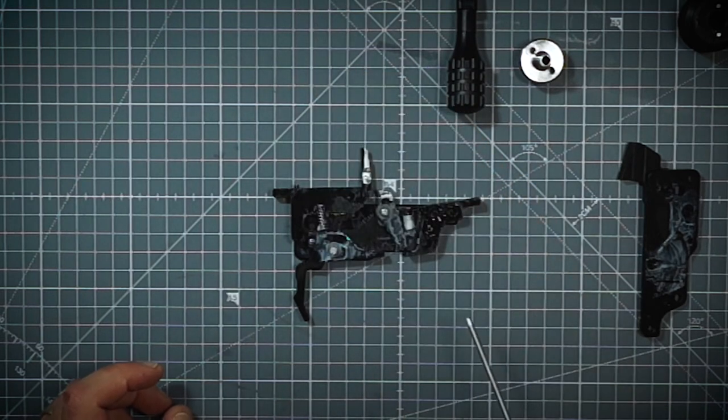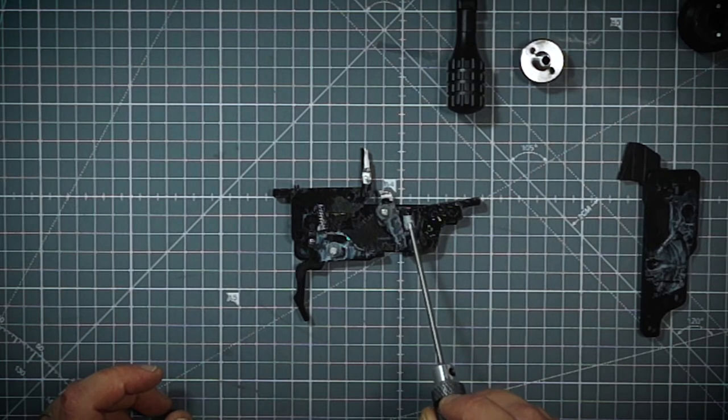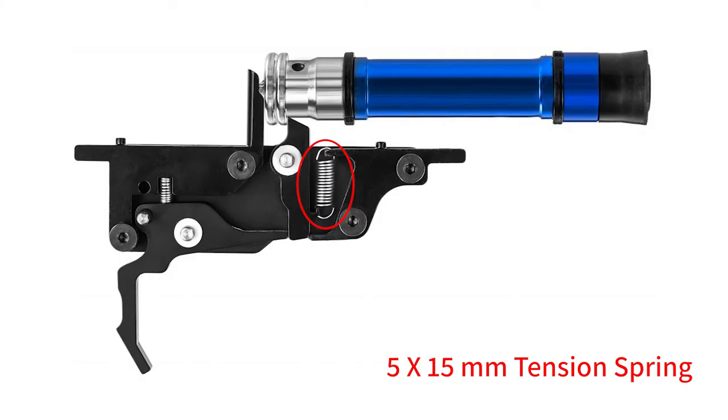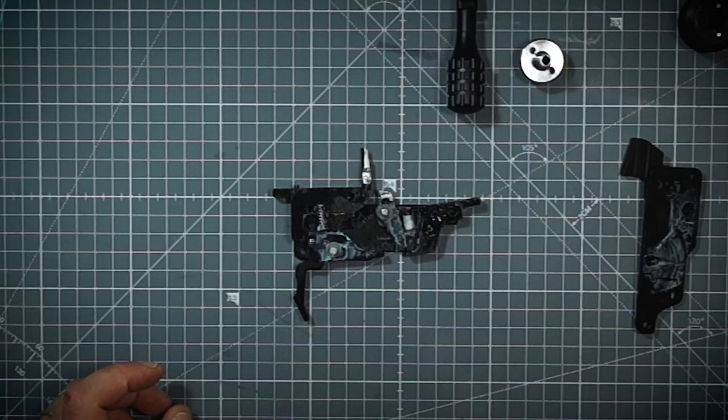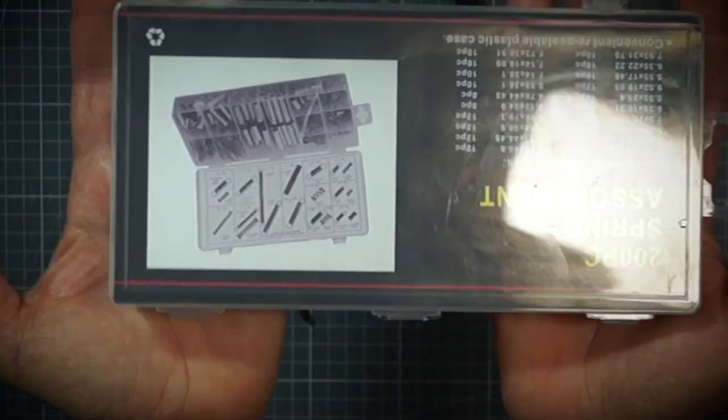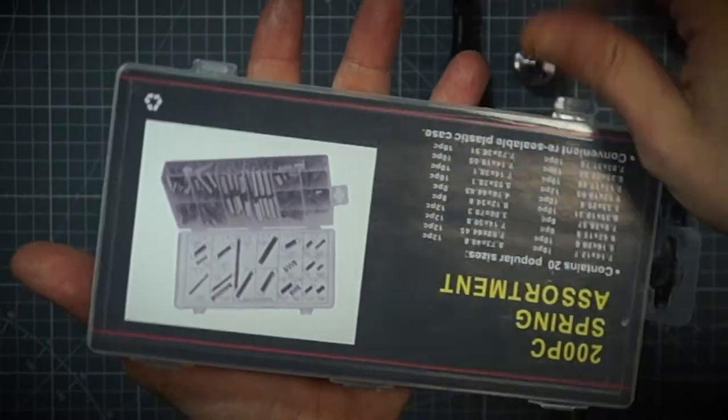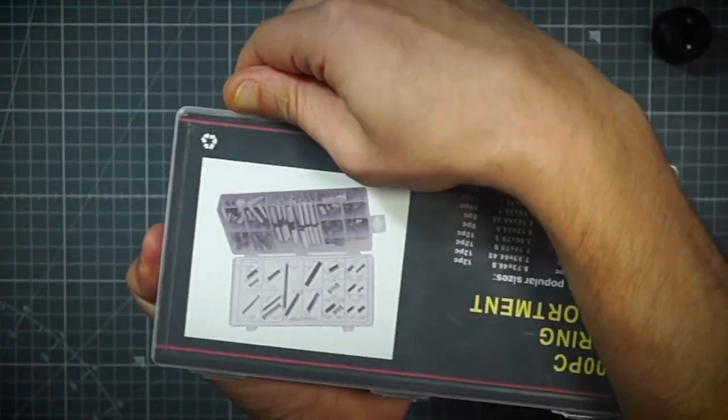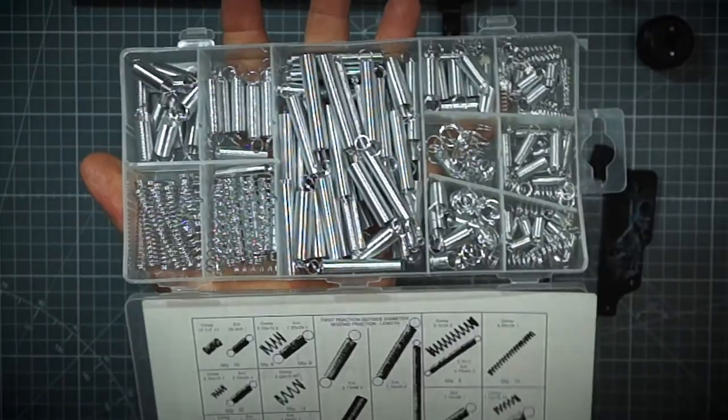So many SSG-10s have the problem of having this spring broken. So in order to fix this, you can actually get a set like this from Amazon or anywhere which has a lot of tension springs in it. So this is called a tension spring—as you can see there are very big sizes and small sizes.